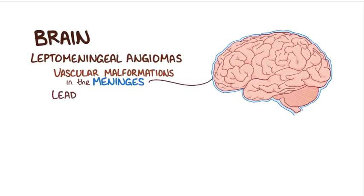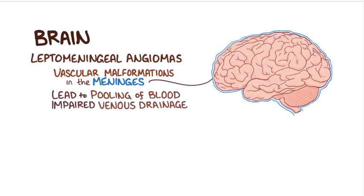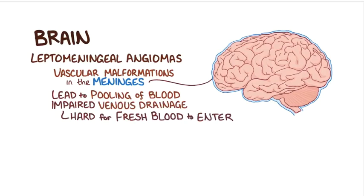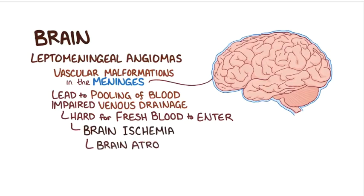It's thought that these angiomas lead to pooling of blood and impaired venous drainage, and that makes it harder for fresh arterial blood to flow in, and this can cause brain ischemia. Over time, the ischemia causes brain atrophy, and the brain tissue can develop areas of calcification.